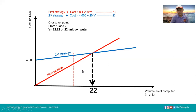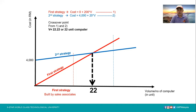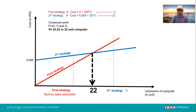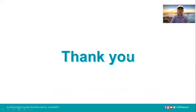On the other hand, when the computer order is more than 22 — let's say 30 computers — the cost for the second strategy is lower at that point, and the first strategy has a higher total cost. Therefore, we choose the second strategy when the order is more than 22 computers. In this case, the computer shop should hire a dedicated technician, as the cost will be cheaper than the first strategy. Thank you for your attention.